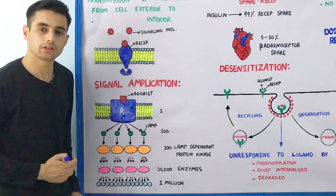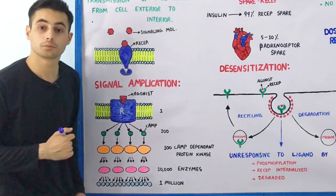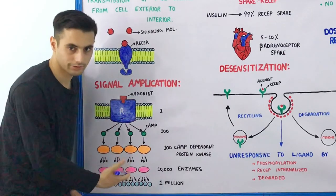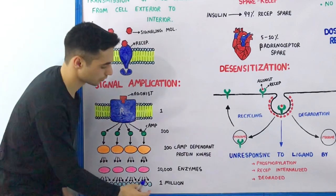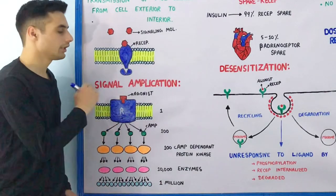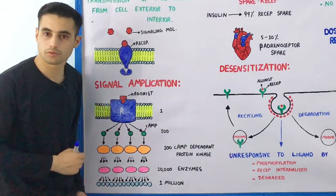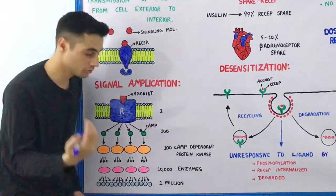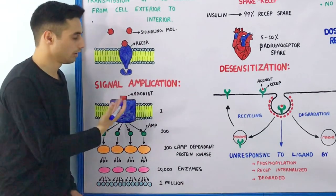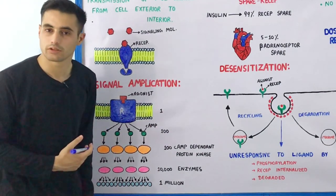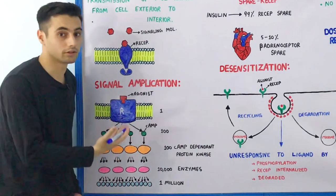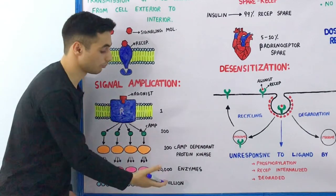Now these 10,000 enzymes will produce 1 million products — the enzymes bind with the substrate and produce 1 million biological products. One agonist binding with the receptor produces 1 million biological products. This is what signal amplification is: signal intensity and duration are increased by million-fold.